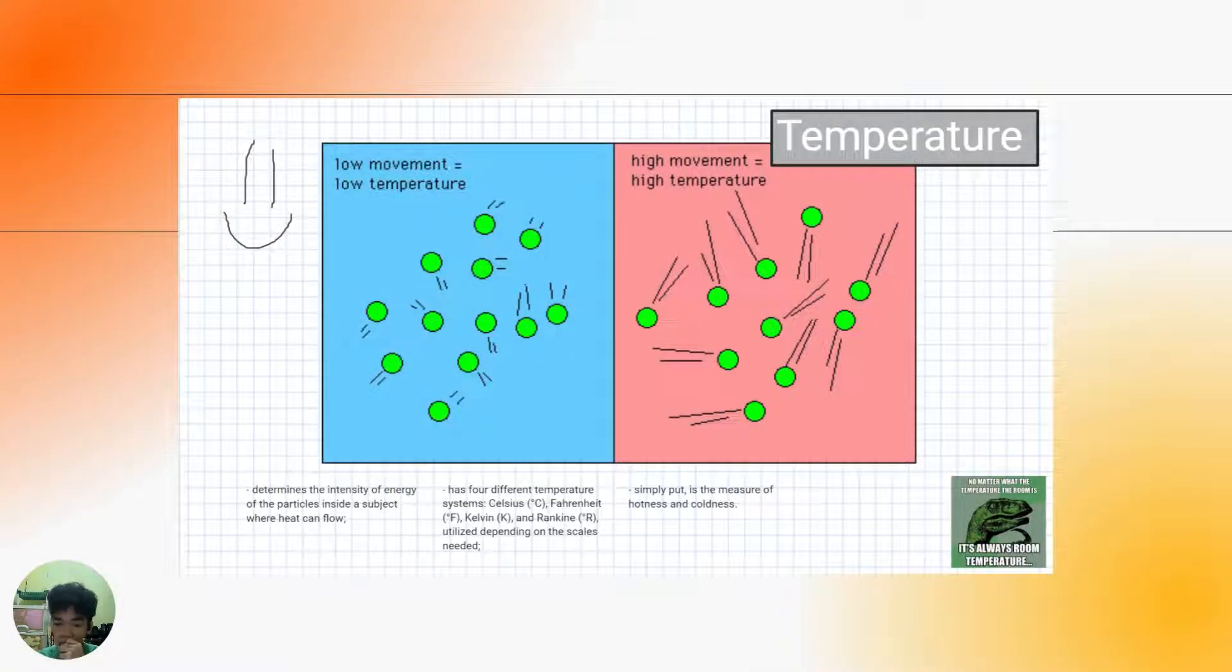Temperature determines the intensity of the energy of the particles inside a subject where the heat can flow. It has four different temperature systems: Celsius, Fahrenheit, Kelvin, and Rankine, utilized depending on the scales needed.